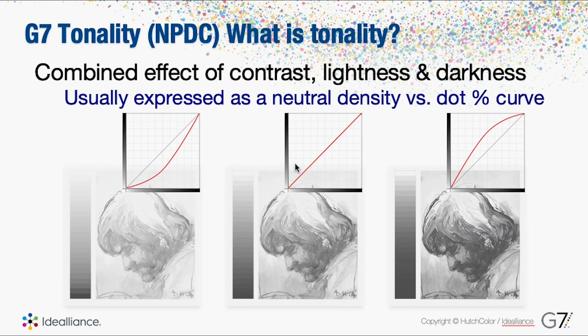This is a basic understanding, a functional understanding for people that need to know the definition of what NPDC is. It's essentially tonality, and that is the combined effect of contrast, lightness, and darkness. You can see here in these three sketches and the three graphs we have one here on the left that is lighter and then one on the far right is considerably darker, and the one in the center is just right.